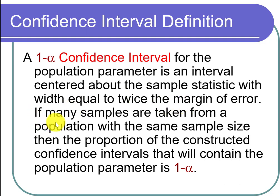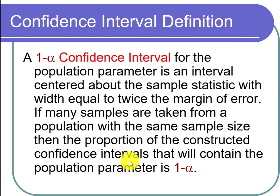In particular, if many samples are taken from a population with the same sample size, then the proportion of the constructed confidence intervals that will contain the population parameter is 1 minus alpha — often 95 percent, sometimes 90 percent or 99 percent, whatever you need in order to feel adequately confident.